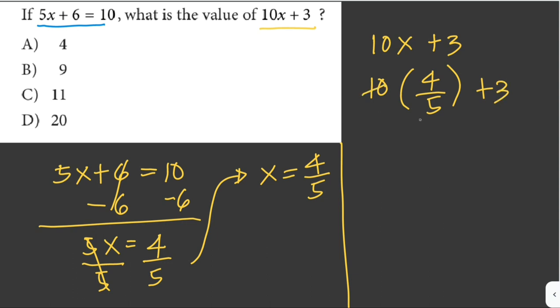So 10 is divisible by 5. So it will be 10 divided by 5 is 2. This is 1. So 2 times 4 is 8. 8 plus 3 is just equal to 11.